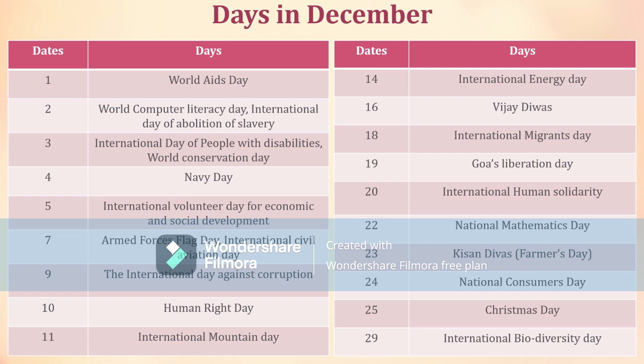Days in December. December 1st: World AIDS Day. December 2nd: World Computer Literacy Day and International Day for the Abolition of Slavery. December 3rd: International Day of People with Disabilities and World Conservation Day. December 4th: Navy Day. December 5th: International Volunteer Day for Economic and Social Development. December 7th: Armed Forces Flag Day and International Civil Aviation Day.